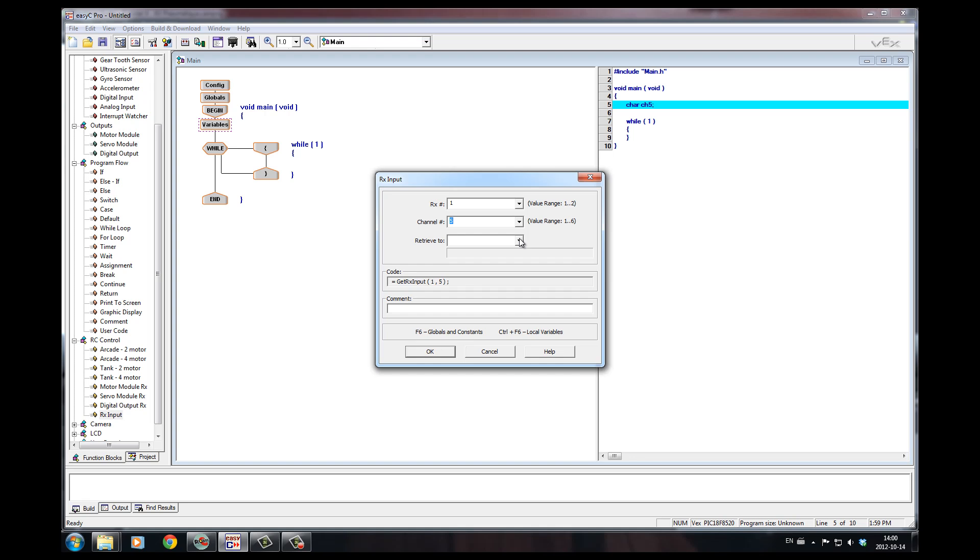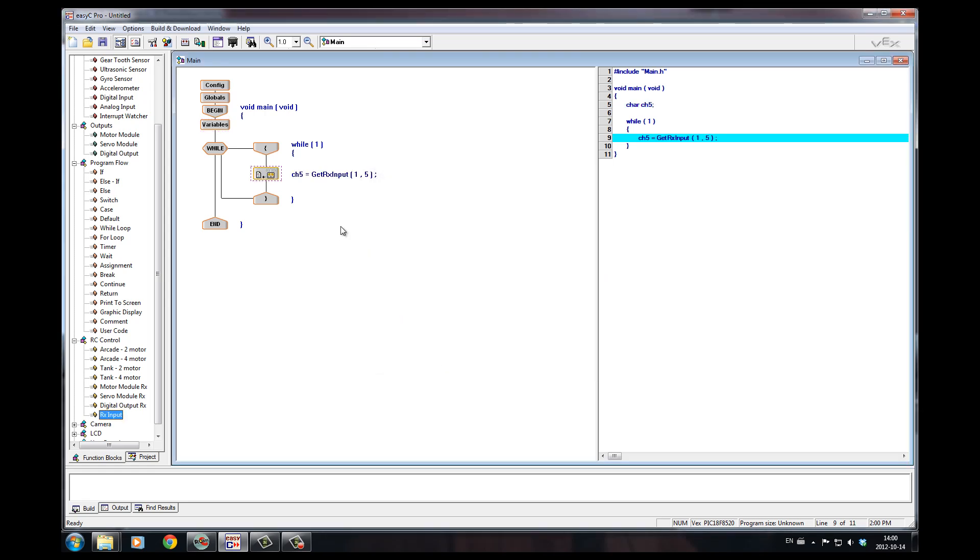And it'll go and read the state of that switch. There are three possible values. 127 is the value of no switches pressed. And the second one is 255. If you've pushed the switch it's 255. And I'm going to read that into the variable called CH5. So what this does is it goes through all the time and just reads the state of that button.